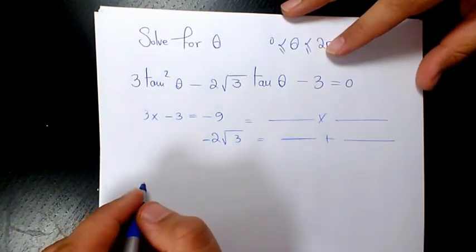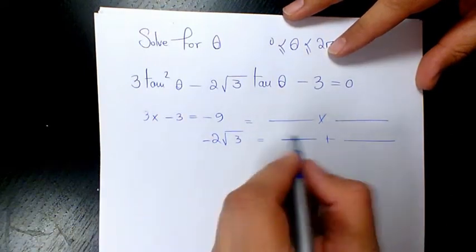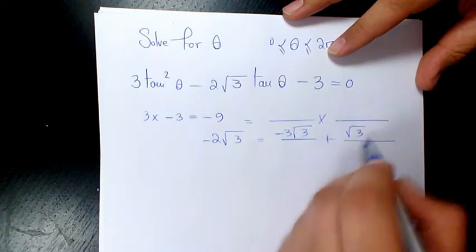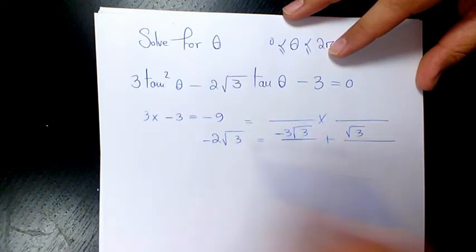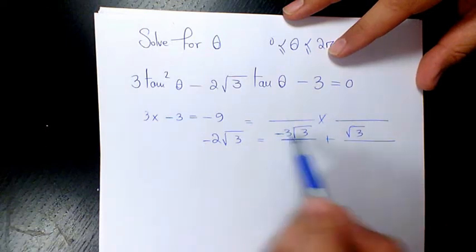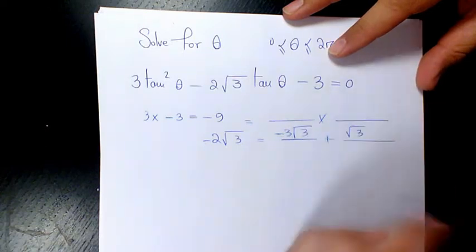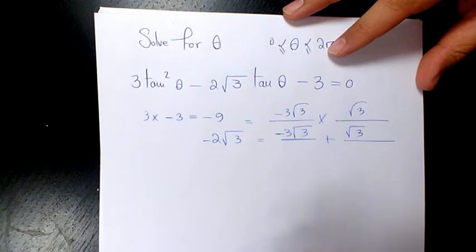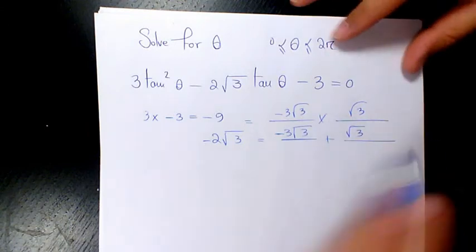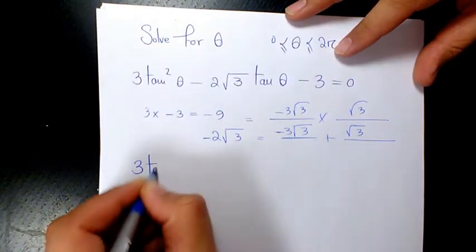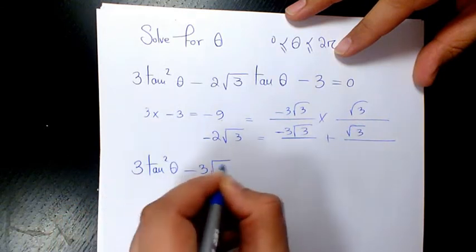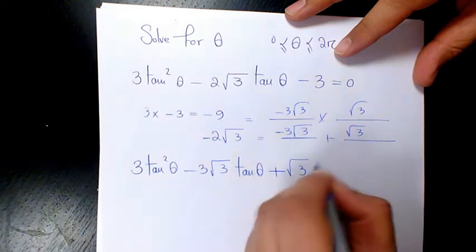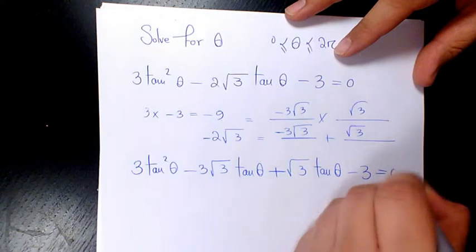We need negative three root three and positive root three — when you add them you get negative two root three, and when you multiply them: negative three root three times root three is negative three times three, which is negative nine. So the two expressions are negative three root three and root three. Then I rewrite the equation as: three tan squared theta minus three root three tan theta plus root three tan theta minus three equals zero.